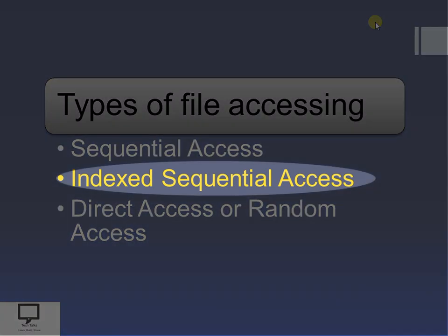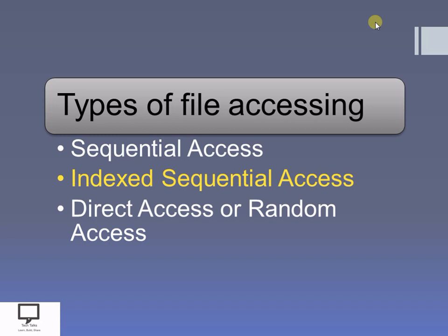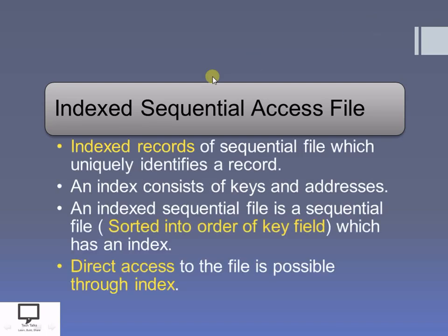In this current video session, I am focusing on index sequential access file. So, what is an index sequential access file? All of you are likely familiar with the sequential access file, where all the records can be accessed sequentially. Here, I am going to add one more point, which is the index. Index records means that all the records — all the information whatever you are going to store in your sequential file — have an index. Index is nothing but the unique identification of any record. All the indexed records are stored sequentially in the file, where you can identify them uniquely.